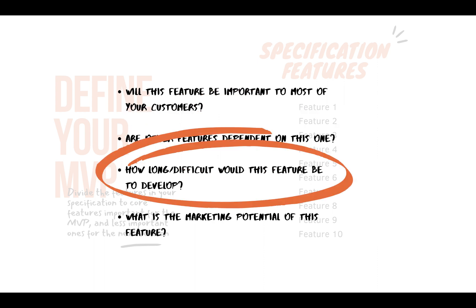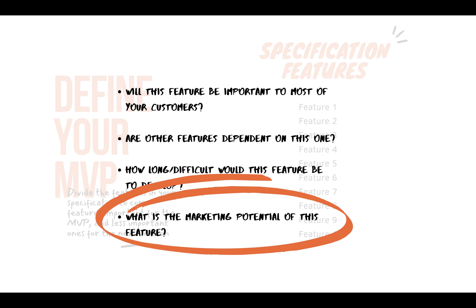The next question is: how long, difficult, or complex would it be to build this feature? This relates to the time estimations you got from the developer. Development hours are your most valuable resource and can be very expensive when you're just starting out, so based on those estimates, decide if this is a feature you can give up or not. The last question is: what is the marketing potential of this feature? If it's easy to market, unique, visually exciting for both merchants and end customers, and has a lot of potential, then yes — this is a feature you'd want to develop first.